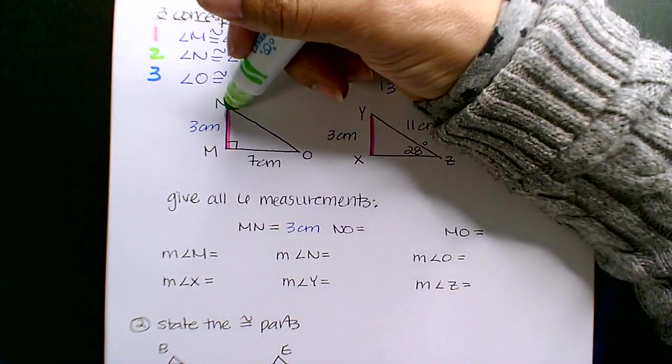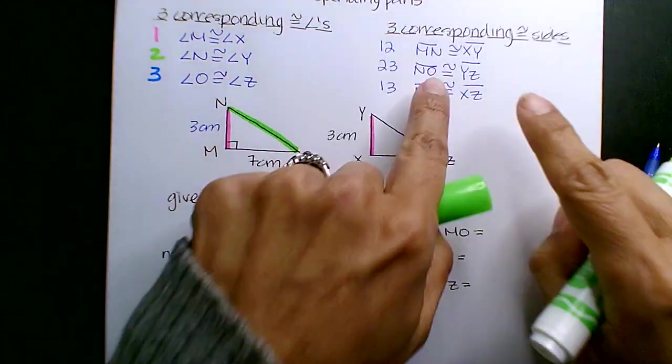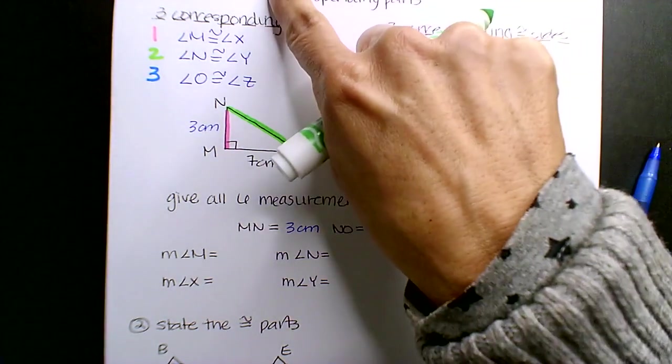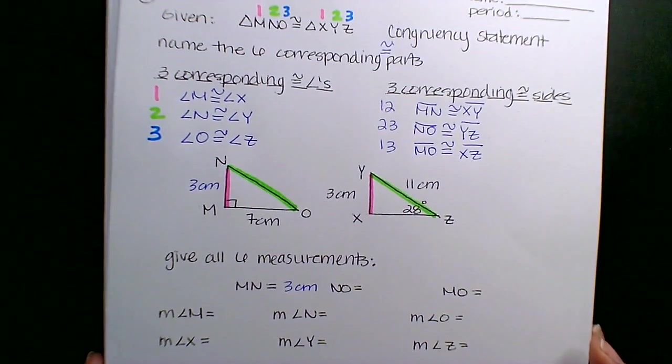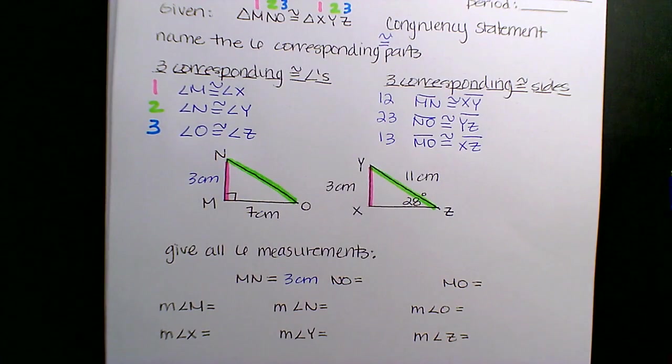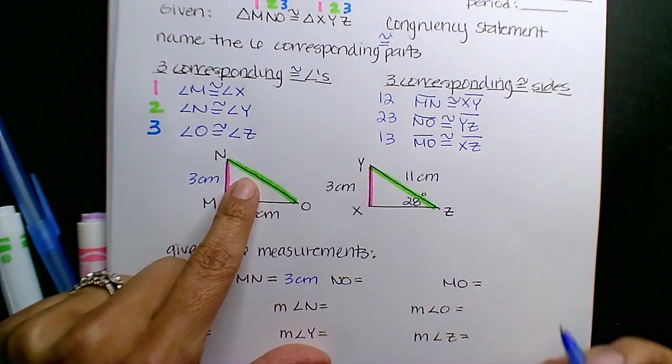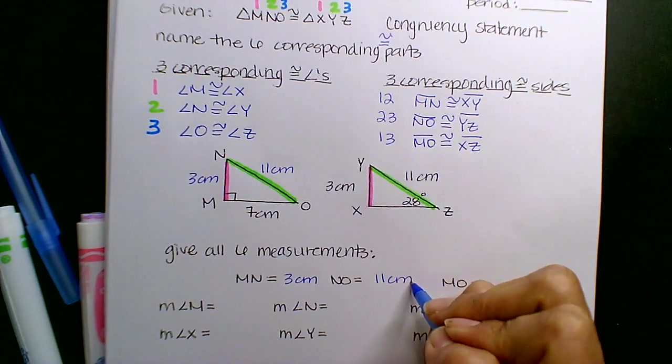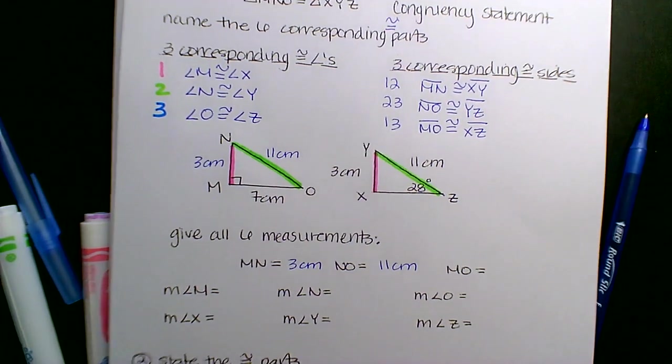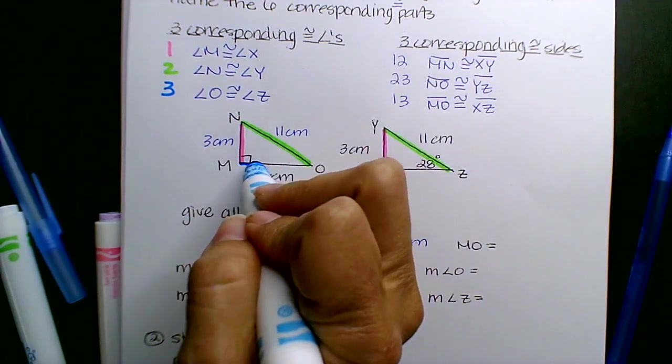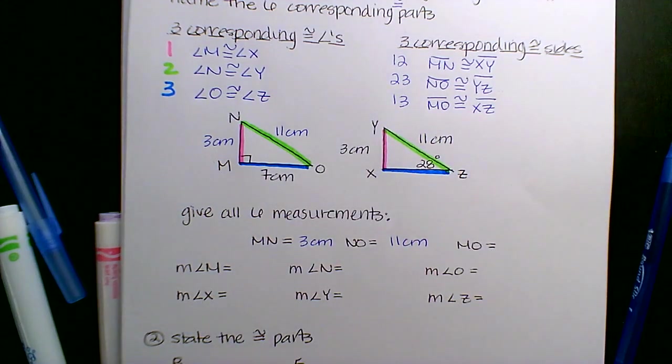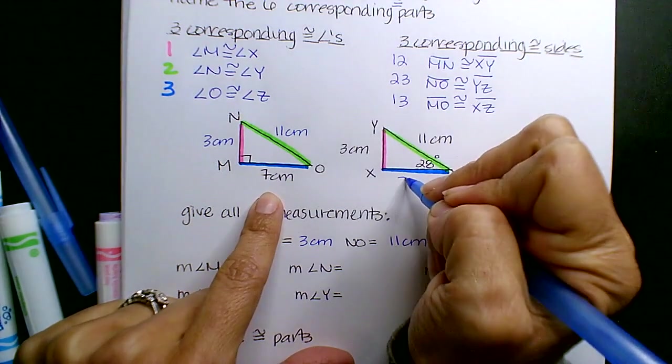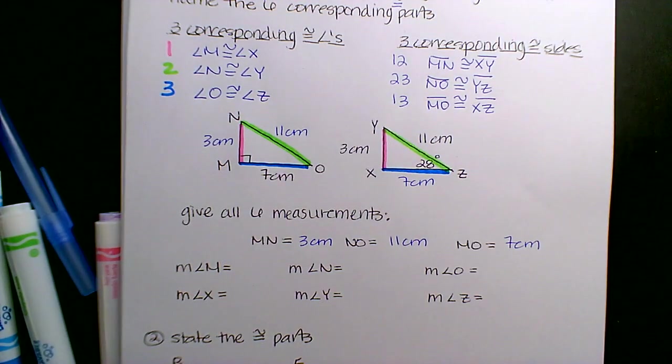NO, length side NO, is correspondingly congruent to YZ because they're in the same order. So if YZ is 11 centimeters, NO is 11 centimeters. And so MO, what's the length of MO? It's the same as XZ, although this was given to you 7 centimeters, but this is also 7 centimeters.